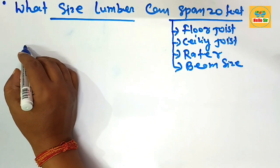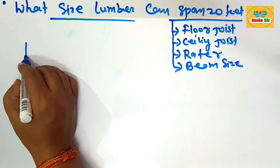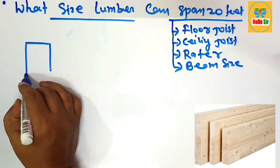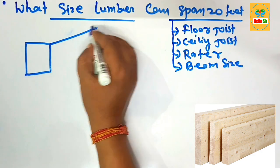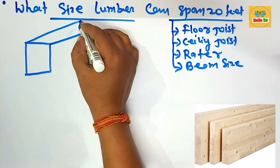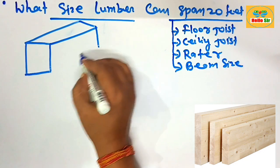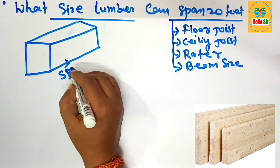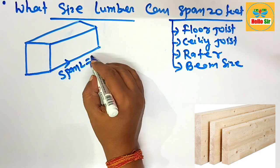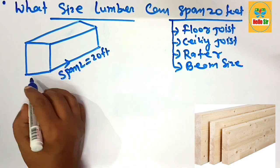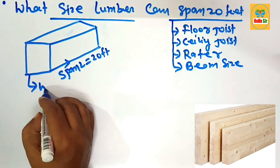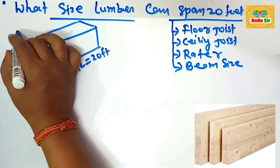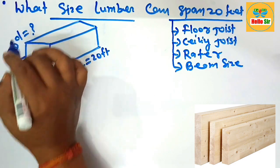Here we understand the different dimensions of the joist. This is a rough diagram of three-dimensional lumber. This one is the length of a span — the span length of the lumber that is about 20 feet. This is the width of the lumber we have to find out, and this section is the depth of lumber, which we also have to calculate.